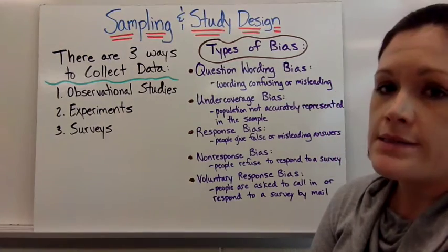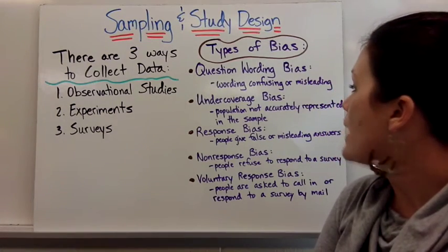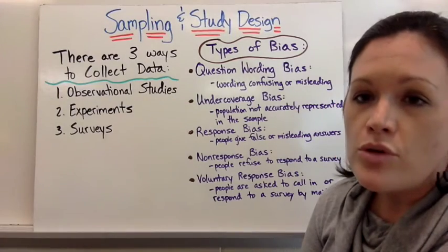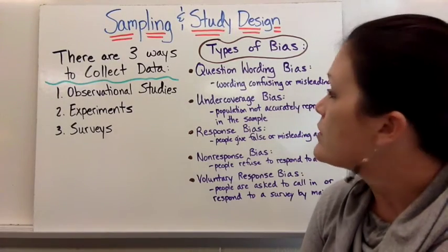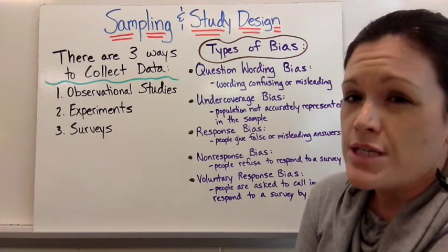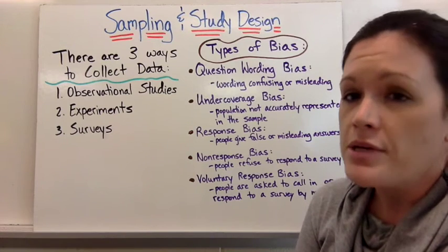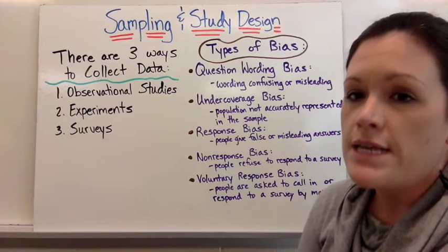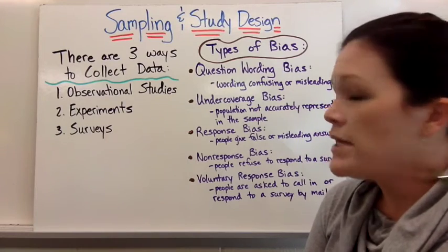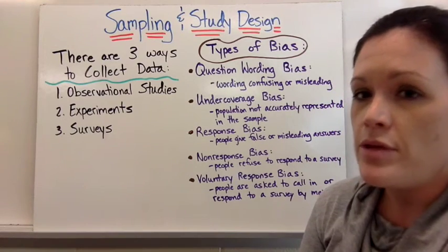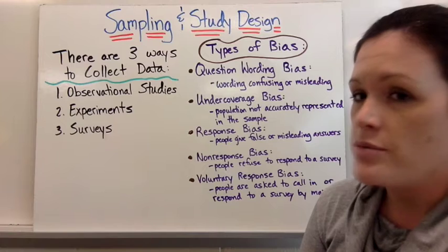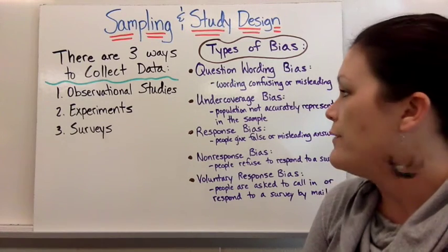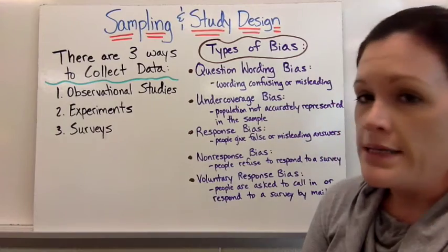Under coverage bias is when a population is not accurately represented in the sample. For example, if you are taking a survey from a little radio station, the only people that hear that broadcast are a small portion of people. It's hard to take that data and represent a population because it's just a sample of people who might listen to that particular type of music and live where that radio station covers.